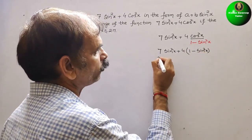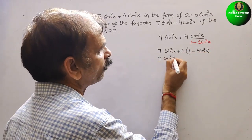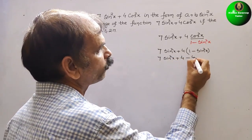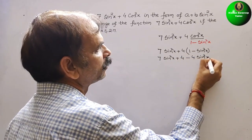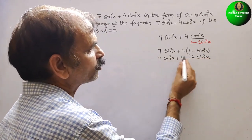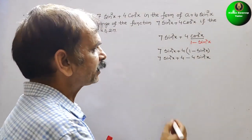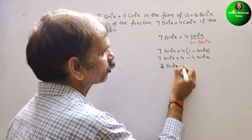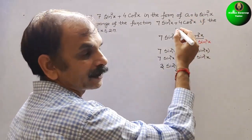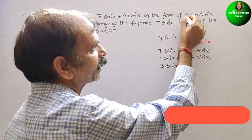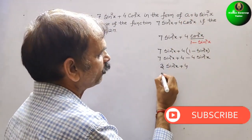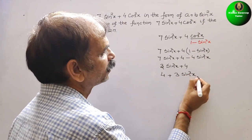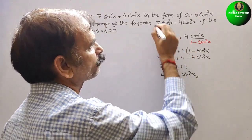Expanding: 7sin²x + 4 - 4sin²x. Combining like terms: (7 - 4)sin²x + 4 = 3sin²x + 4. Writing in the required form: 4 + 3sin²x. So a = 4 and b = 3. This is the answer for part one.